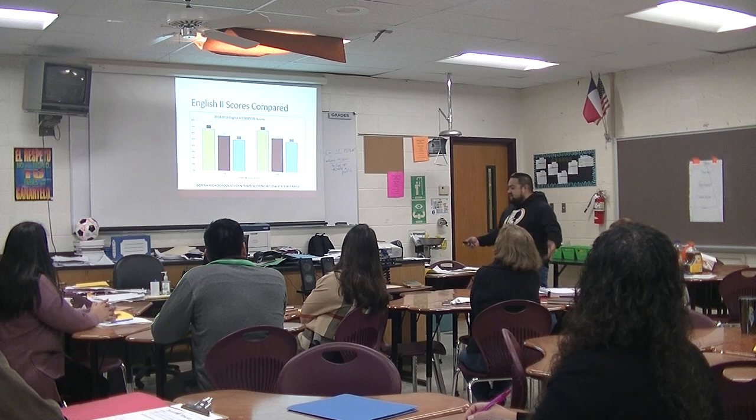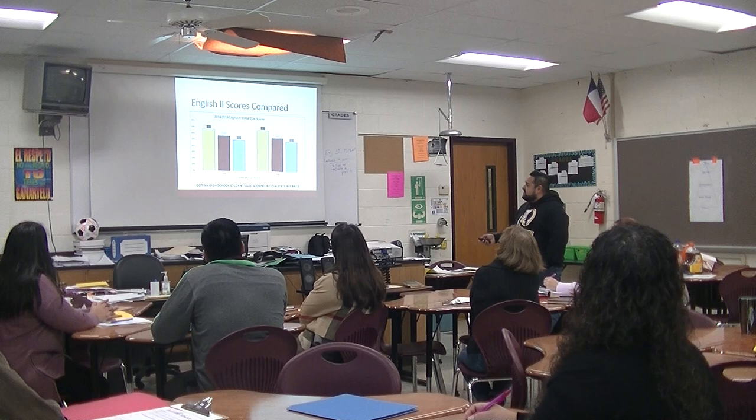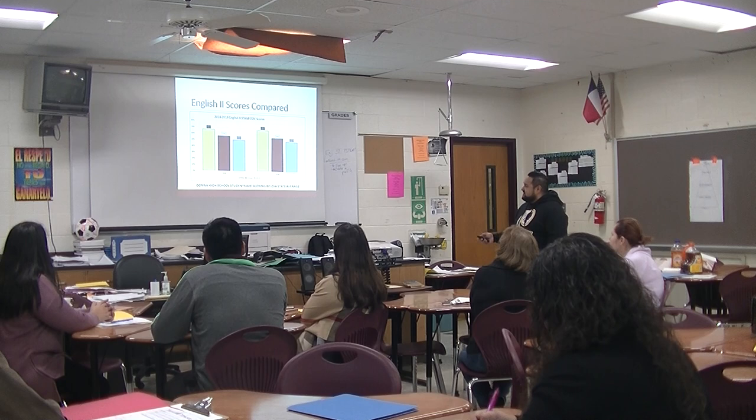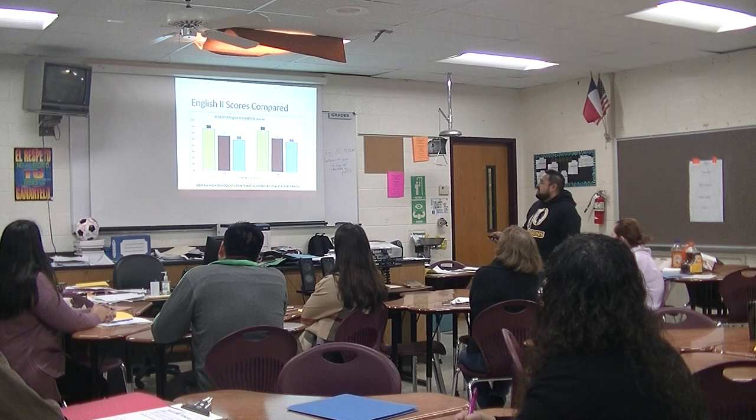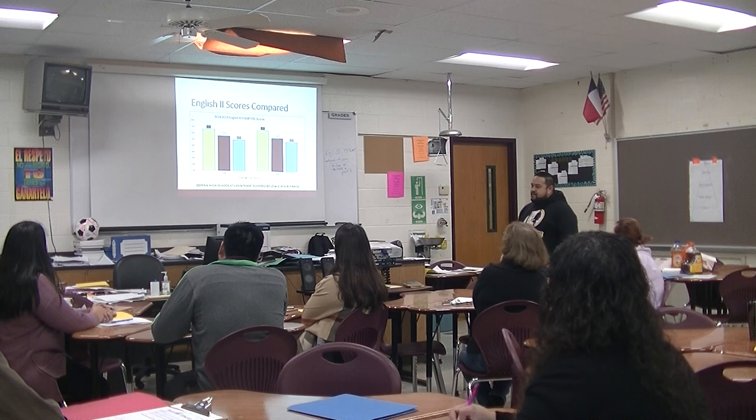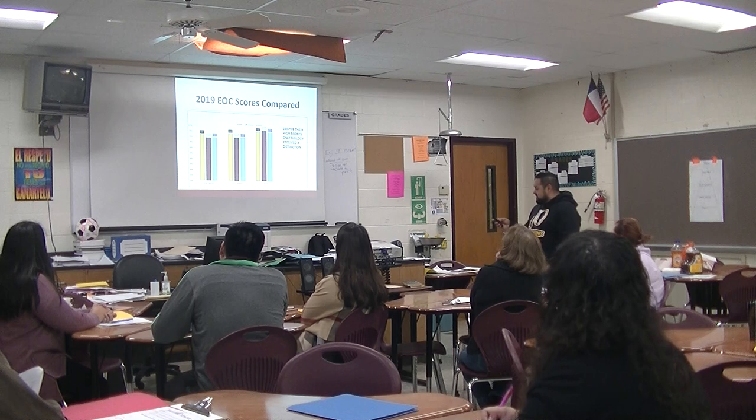Some of the strategies our sister school is doing we need to continue here as well. Looking at all students compared to the state: the state is shown in yellow, here's Donna High, and here's Donna North. EL students performed higher than our EO students, but overall our students averaged out to a 51 — a little below 57.